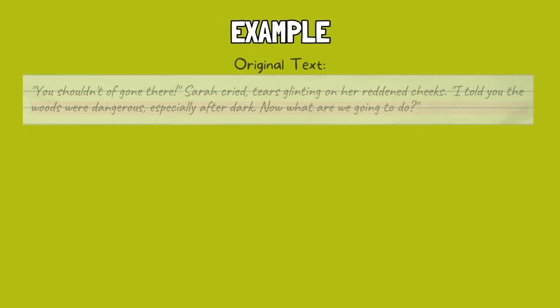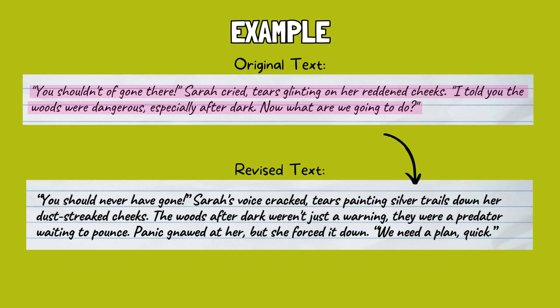Take a look at this example. The original text has a spelling mistake of 'shouldn't of,' which should be 'shouldn't have.' The word 'reddened' is a bit redundant with tears already mentioned, and the phrase 'what are we going to do' feels unspecific and repetitive of the situation's danger. In the revised version, we have corrected the contraction to 'shouldn't have,' replaced 'reddened' with the more evocative 'dust streak' to show the journey and emotional distress, and rewrote the final question to convey urgent action and introduce a new narrative tension — the need for a plan.